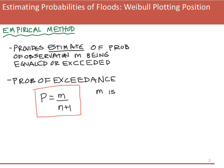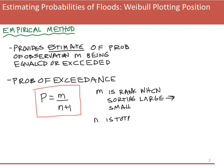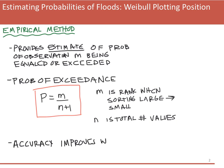P is equal to M divided by N plus 1. M is the rank of any observation when we sort the observations from large to small. So we sort them from large to small, and M is the rank — when M is 1, that's the largest. N is our total number of observations.